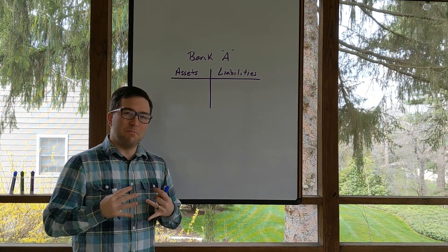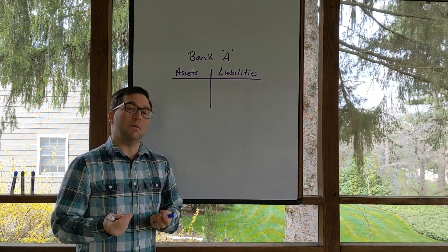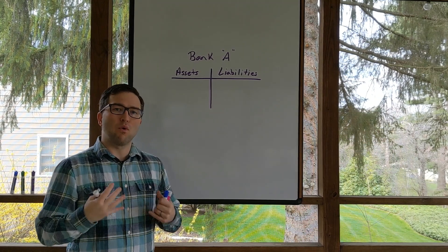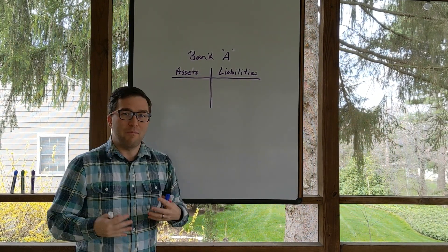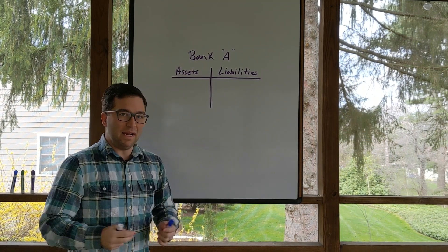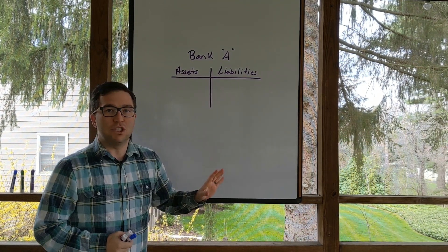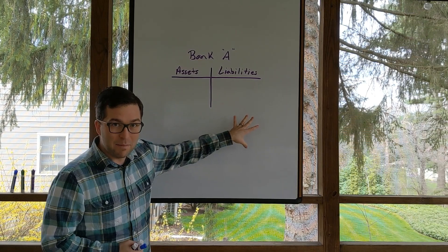Let's run through the simplified balance sheet of a bank that we're going to be using to show how banks play a role in the creation of money. Up here you can see that I have Bank A, just a simple bank, where we've broken their balance sheet into assets and liabilities.